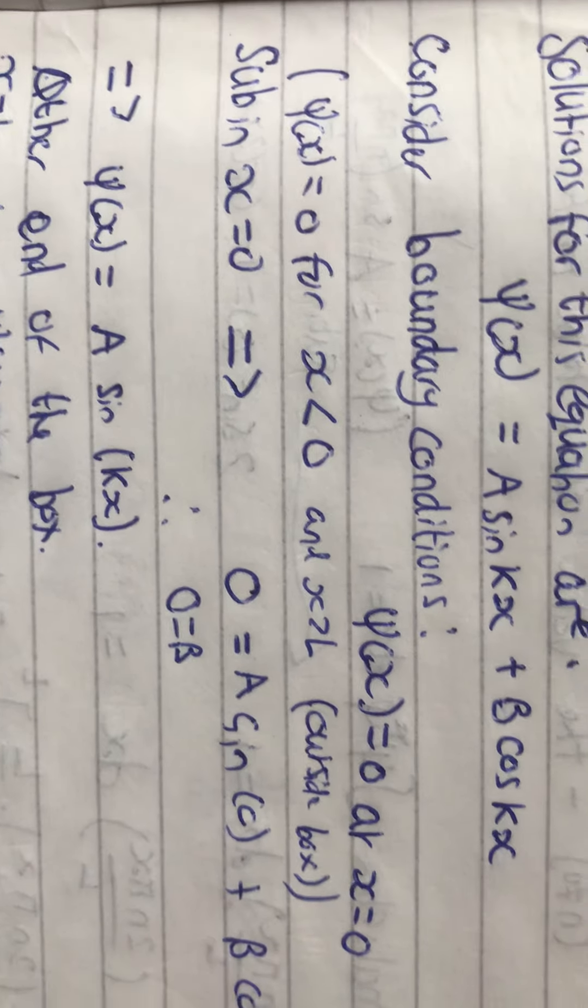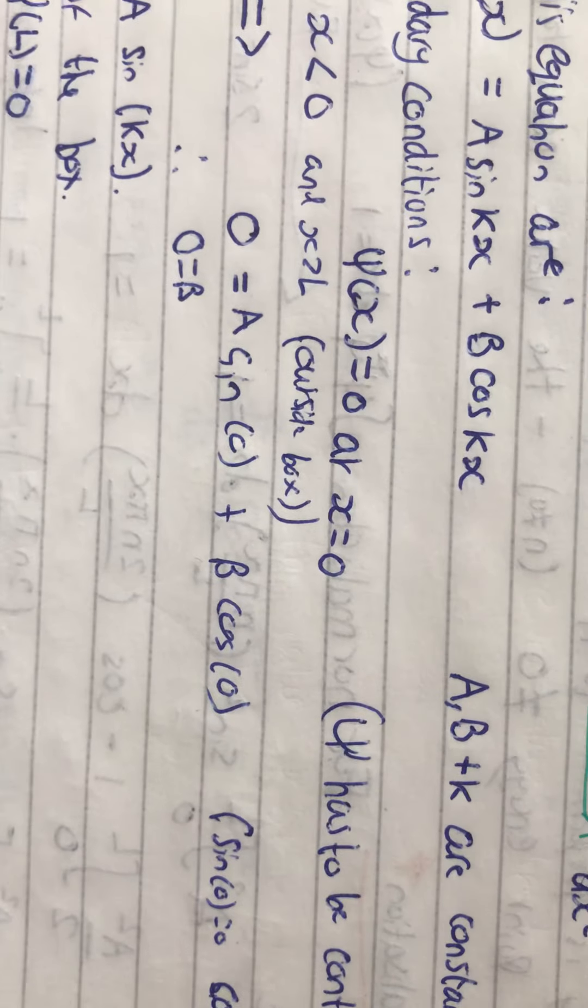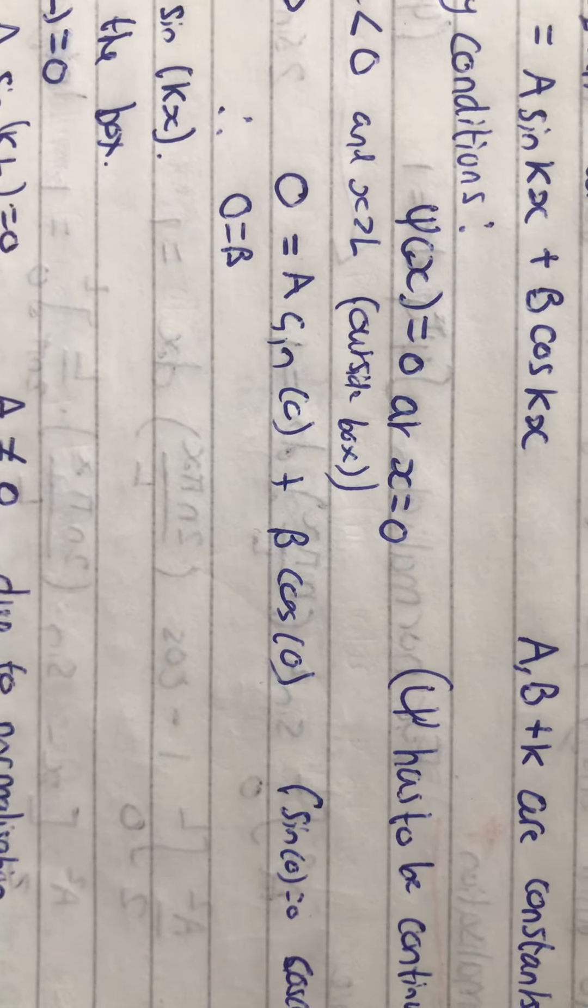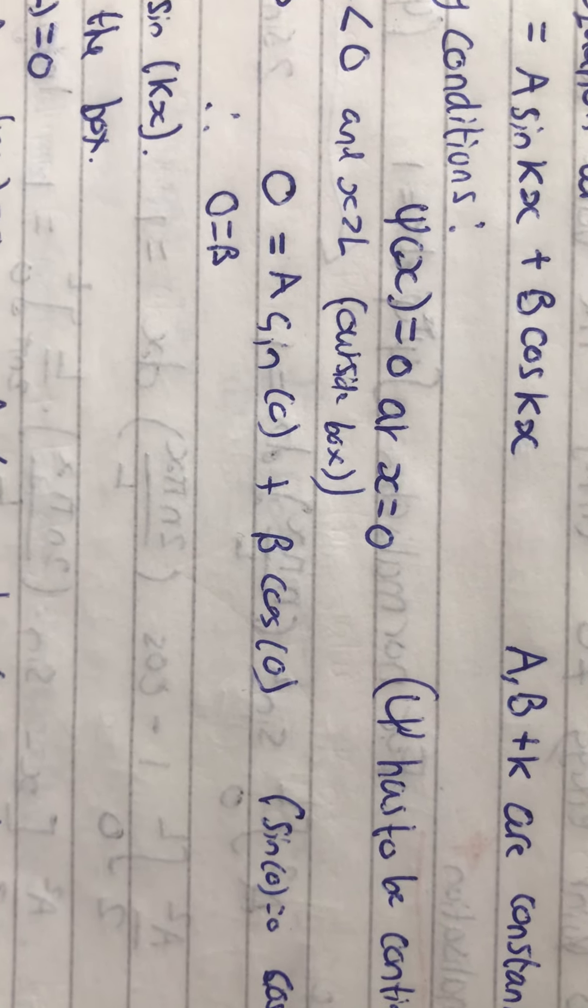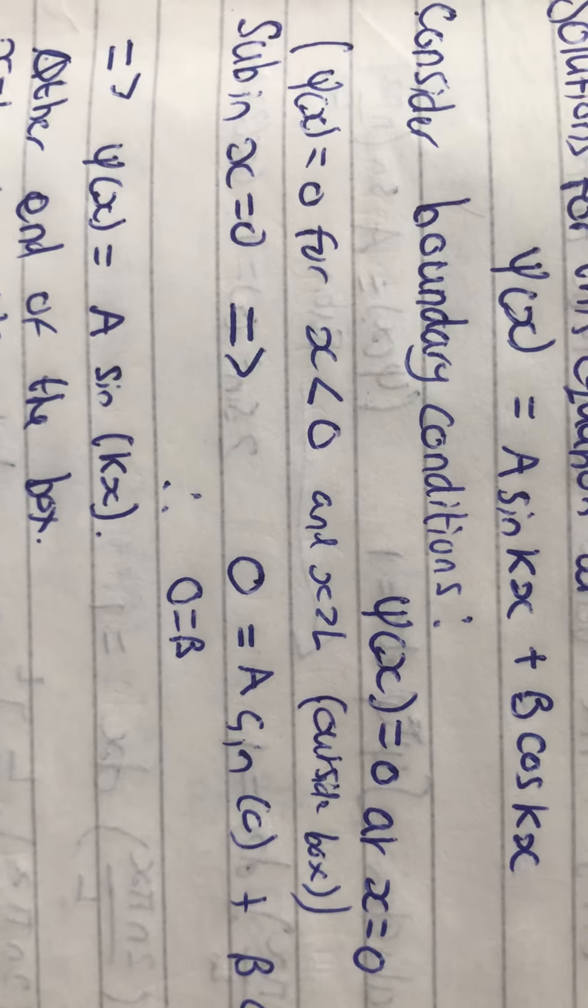So, if we sub in x equals 0 to this equation above here for the wave function, we'll get 0 equals a sin(0) plus b cos(0). We know that sin(0) equals 0 and cos(0) equals 1. So, we can say that 0 equals b.